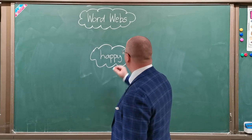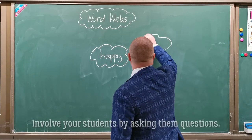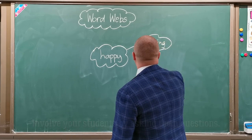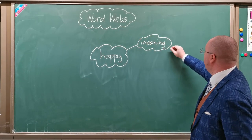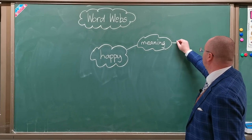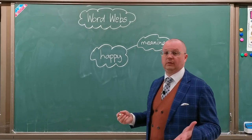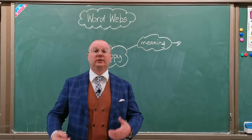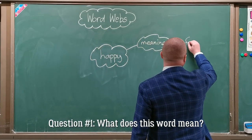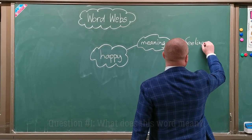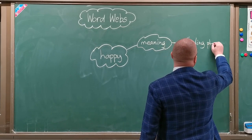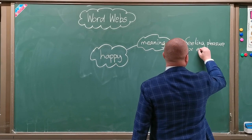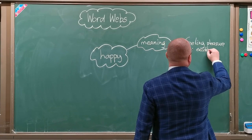So let's see what we can elicit from the word 'happy.' First of all, I think we want to start with the meaning of this word. What does this word mean? Here you can write down what this word means and you can elicit this from the students. What does 'happy' mean? It means feeling pleasure or excitement, for example.